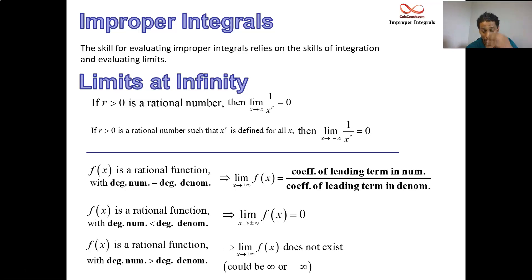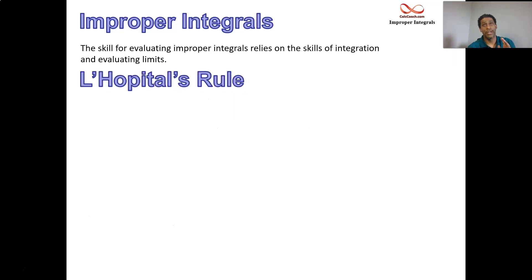On top of this skill, remembering how to find limits at infinity, I also need you to remember, of course, L'Hopital's rule. If you have a ratio of functions, and they're both headed to 0, as x goes to a, then that is an indeterminate form.